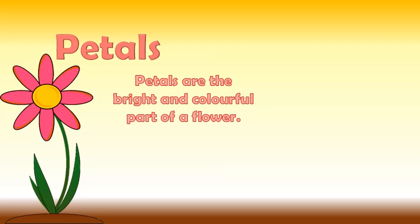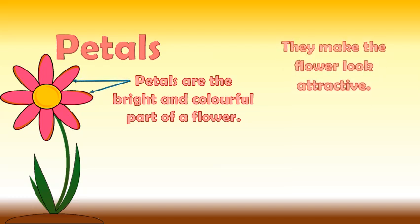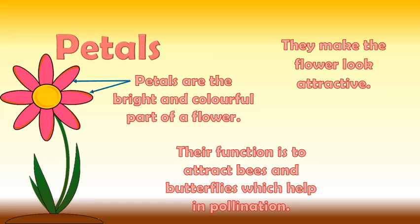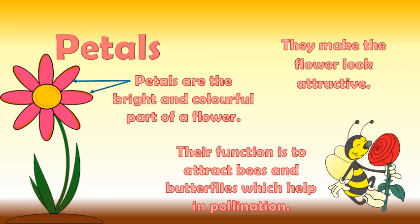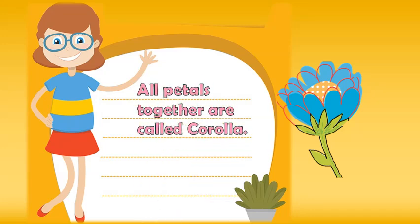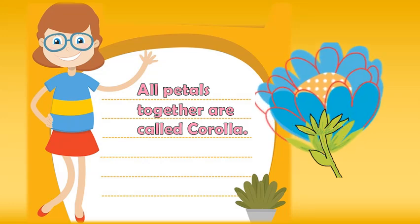Petals are the bright and colorful part of a flower. They make the flower look attractive, and their function is to attract bees and butterflies, which help in pollination. All petals together are called the corolla.